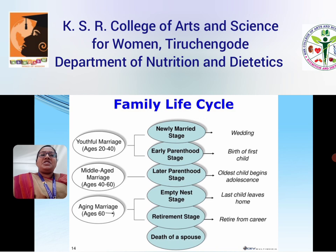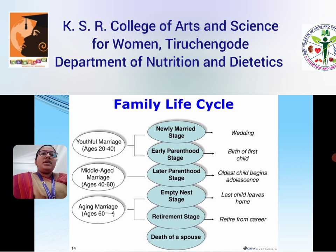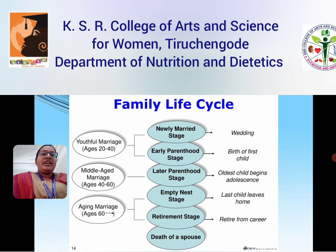These are the stages and sub-stages of the family life cycle. First, the newly married and early parenthood stage, which is youthful marriage — ages 20 to 40 — during which the wedding and birth of the first child occur. Next is the latter parenthood stage, which is middle-aged married life — ages 40 to 60 — when the oldest child begins adolescence. Next is the empty nest stage and retirement stage, which is above 60, aging marriage, retired from career, and the last child leaves home.